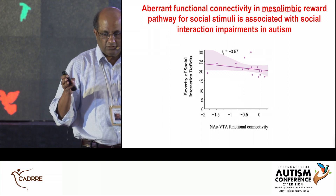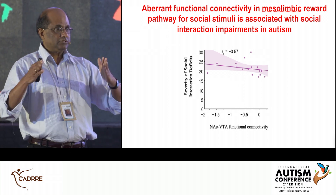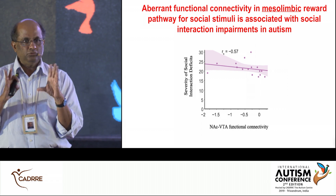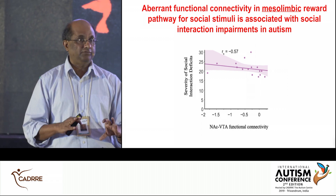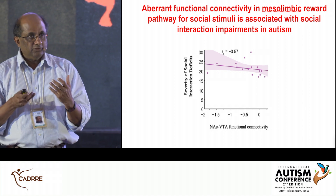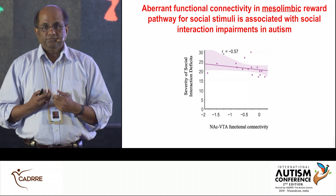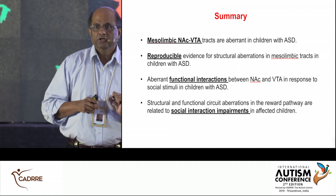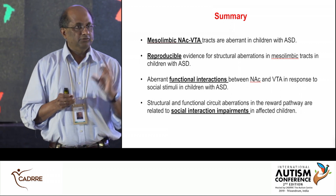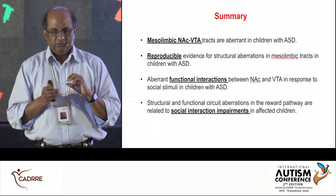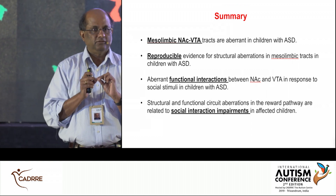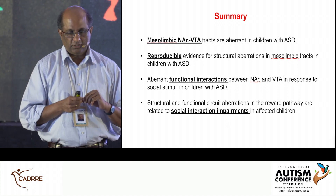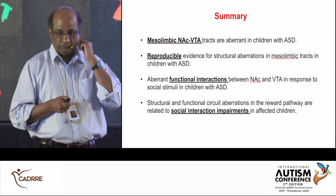We also see a deficit in signaling along this reward pathway, and the strength of this functional connectivity — not structural — is also related to the severity of social deficits. So we have two pieces of evidence that this circuit is dysfunctional in children with autism. To summarize: the reward circuit is aberrant in children with autism, we are able to reproduce this result, and it is related to social interaction impairments as assessed using the ADIR.